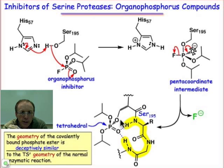Now that we understand the mechanism of serine proteases and have an idea about inhibitors, let's take a look at a specific example. This is an irreversible inhibitor of serine proteases — it's actually the nerve gas sarin — and what we really want to understand here is why it is able to mimic the naturally occurring substrate.